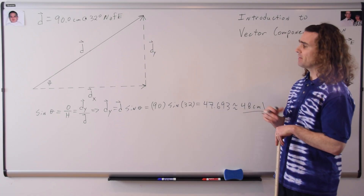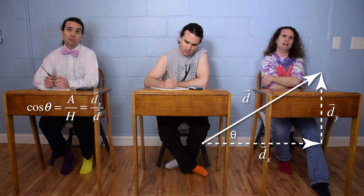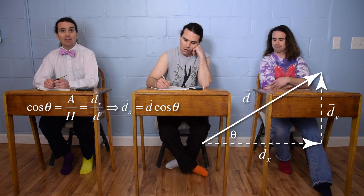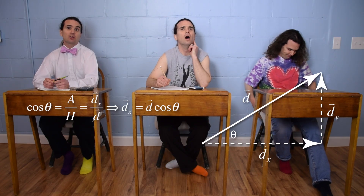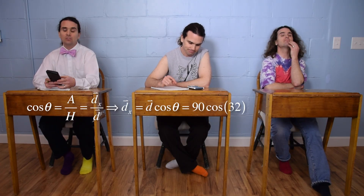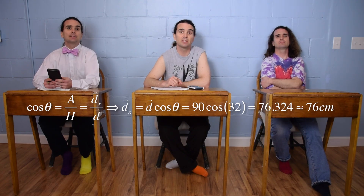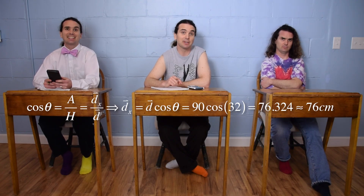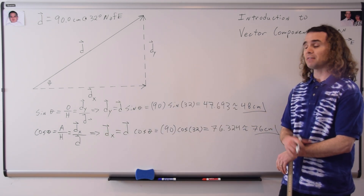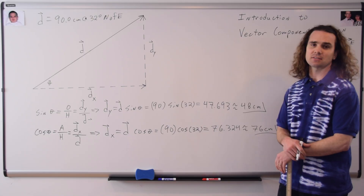And Billy, how can we figure out displacement in the x-direction? Now we can use cosine theta equals adjacent over hypotenuse, or displacement in the x-direction over d. Multiplying by d, we get the displacement in the x-direction equals d times the cosine of the angle. With numbers, that works out to be 90 times the cosine of 32, which is 76.324, or with two sig figs, 76 centimeters. Correct. You can use the fact that cosine of theta equals adjacent over hypotenuse to solve for the displacement in the x-direction, which is 76 centimeters.